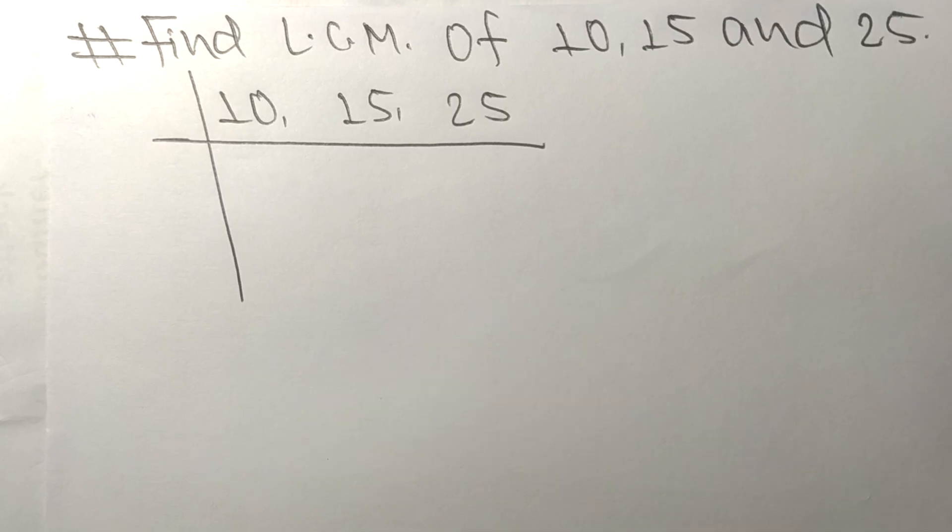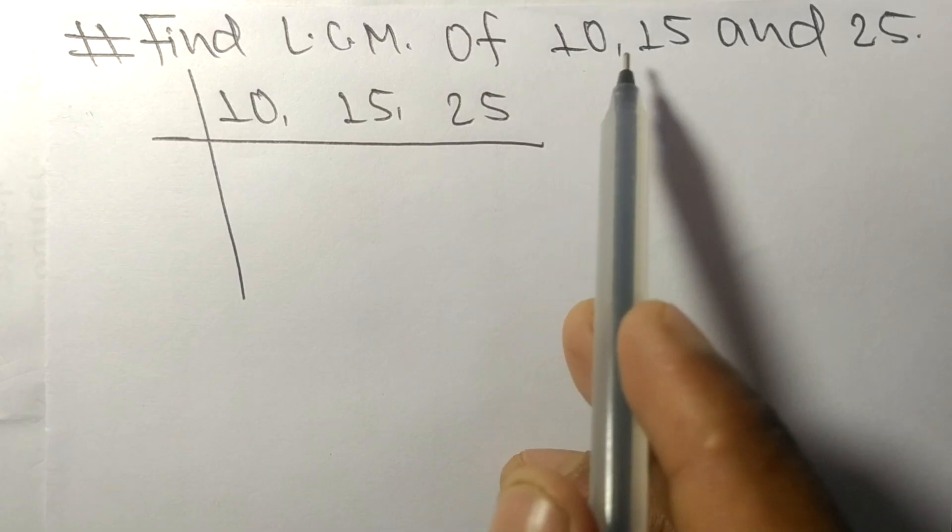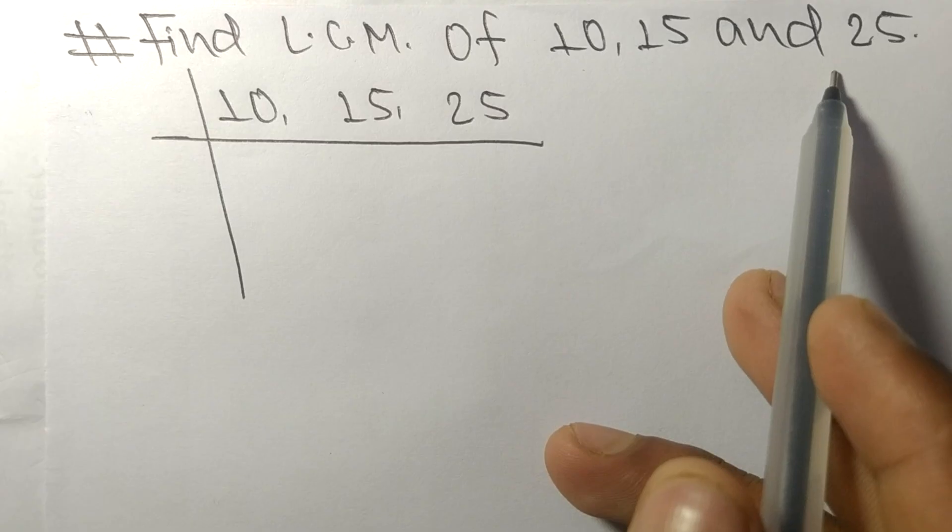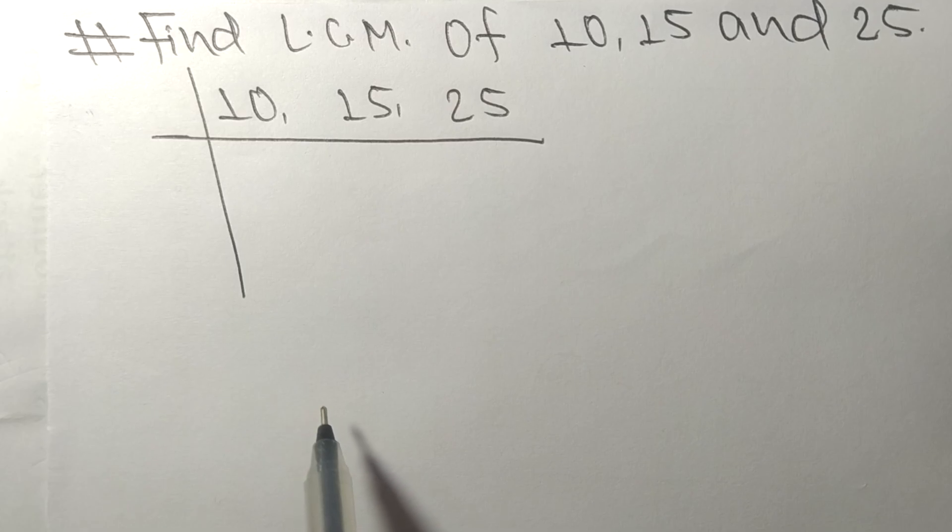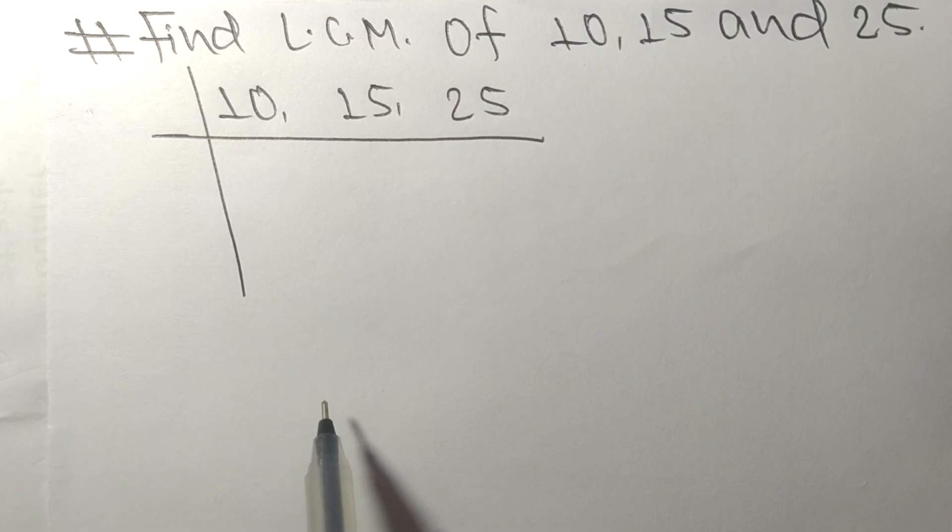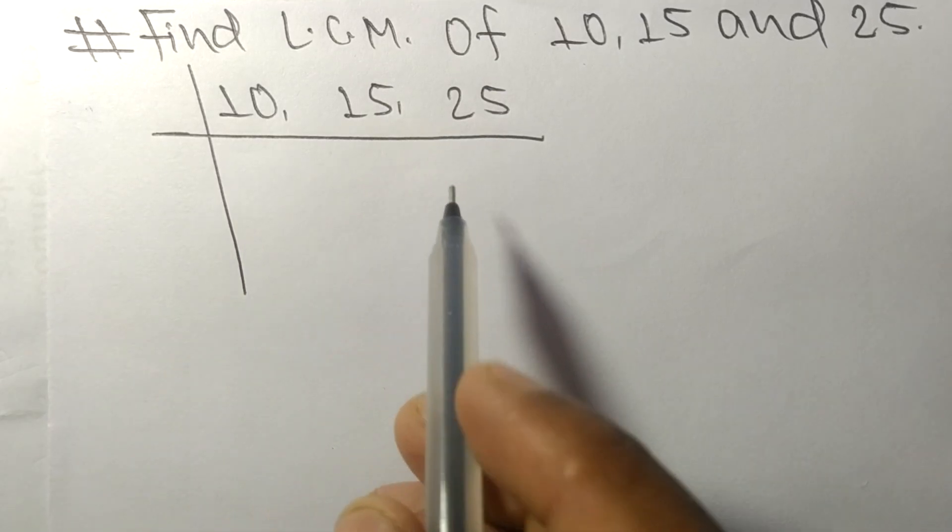Today in this video we shall learn to find the LCM of 10, 15, and 25. To find LCM, we have to choose the lowest number that can exactly divide at least any two of these numbers.